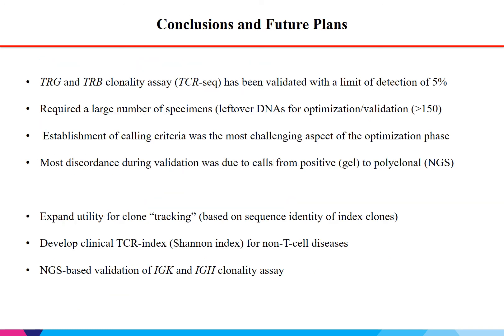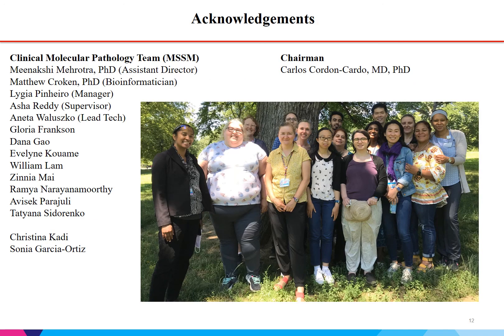In summary, we underwent optimization and validation for TRG and TRB by NGS to replace our gel-based method. It was validated with a limit of detection of 5% and required more than 150 leftover specimens to perform both steps. We established the calling criteria, which was the most challenging aspect, and felt most discordance arose from the downgrading of calls from positive to polyclonal. We plan to expand our studies to allow for tracking, develop a TCR index based on a Shannon index determination for non-T-cell diseases, and expand validations to include IgKappa and IgH clonality assessments. Thank you for your attention, and thank you to our team and our chairman for their continued support.